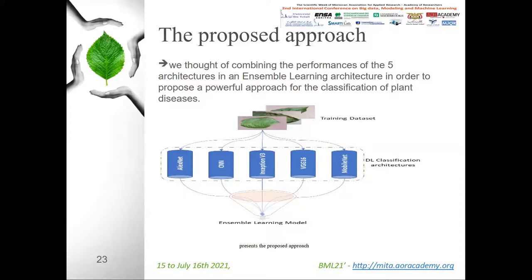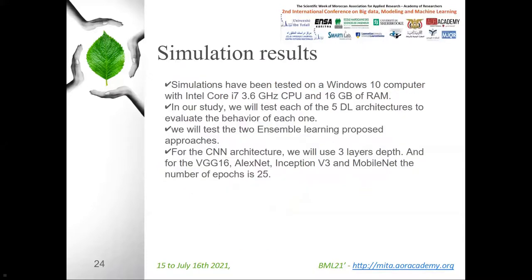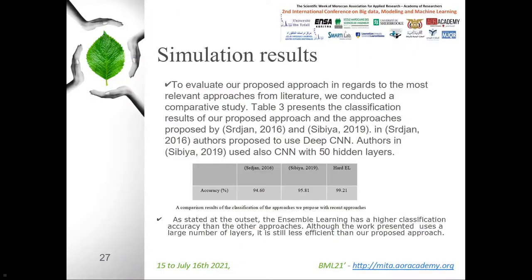In our study, we tested each of the five deep learning architectures to evaluate the behavior of each one. Then we tested the two ensemble learning proposed approaches. For the CNN architecture, we used three layer steps, and for VGG16, AlexNet, Inception V3, and MobileNet, the number of epochs is 25. Table 2 presents the accuracy of the five deep learning architectures, the accuracy of the soft ensemble learning, and the accuracy of the hard ensemble learning.